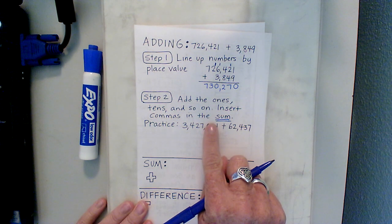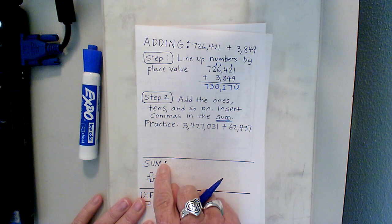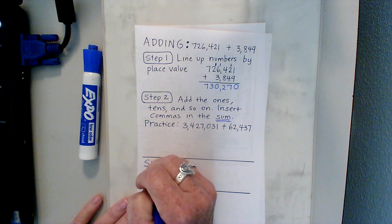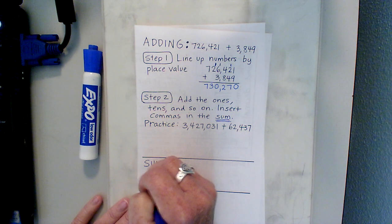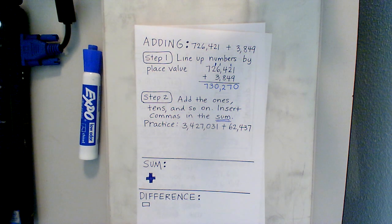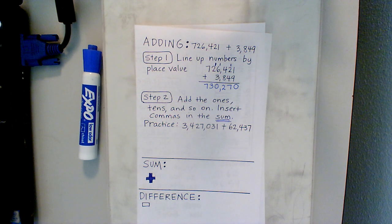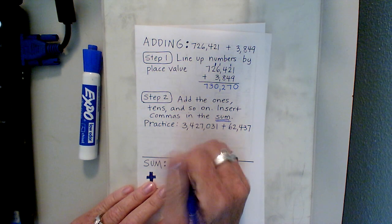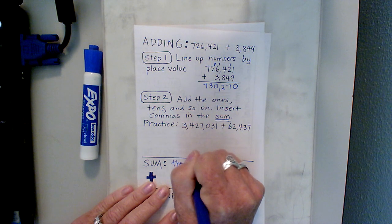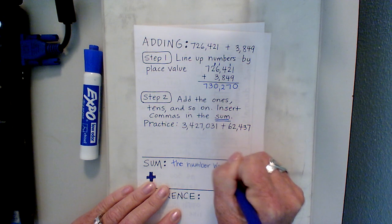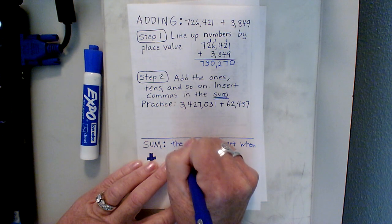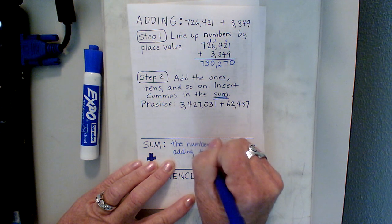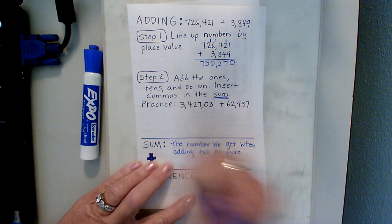Before we go to the practice, let's look at the vocabulary word for adding and subtracting. What do you think would be a good definition for the word sum? Adding? That's not a definition, that's a word. The answer is two words but not a definition. For what kind of problem? Very good. So the sum is the number we get when adding two or more addends.